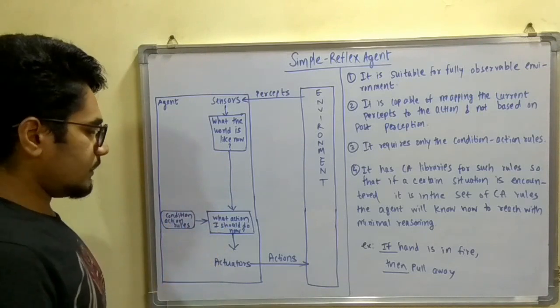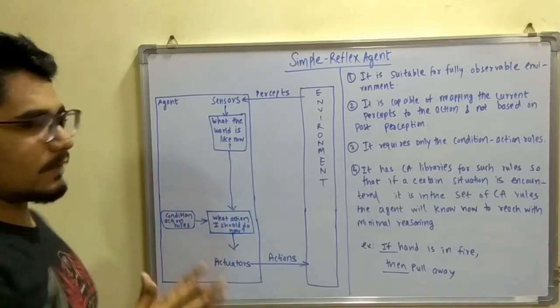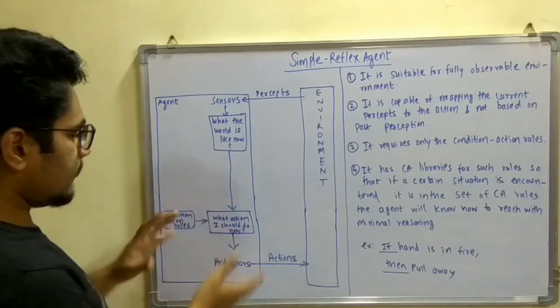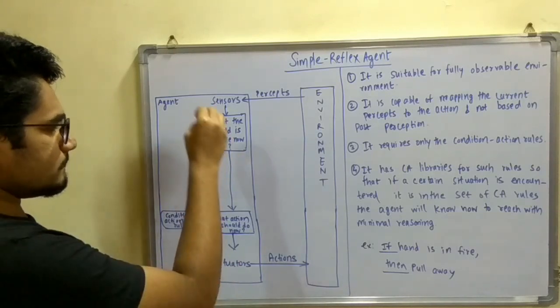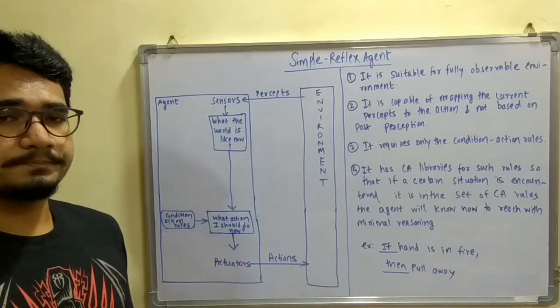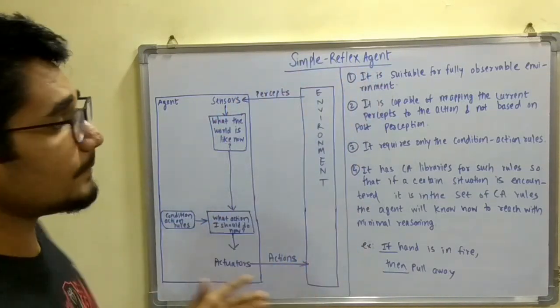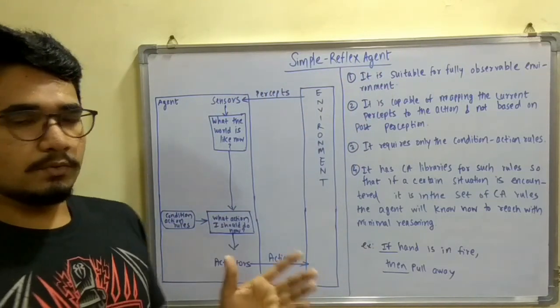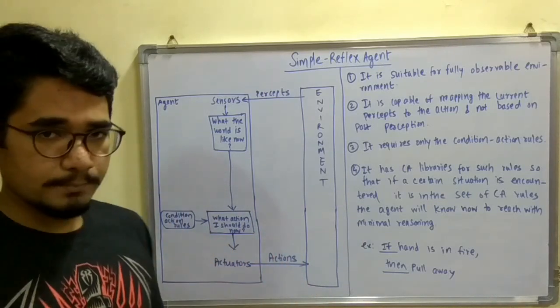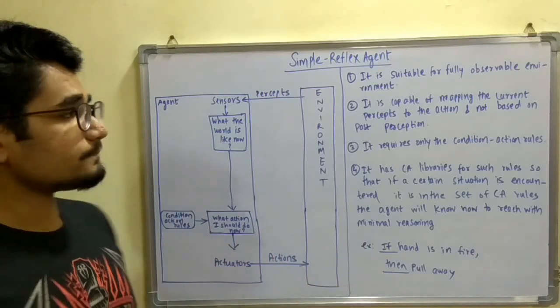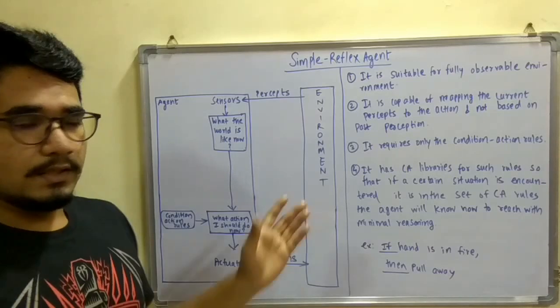That's the kind of knowledge learning with this simple reflex agent, but not completely learning. The agent should be able to completely see the environment. It is suitable only for fully observable environment. If it does not have any fully observable environment of what is going around it, it cannot act wisely.